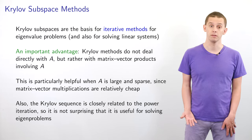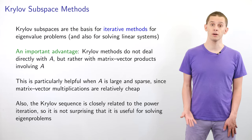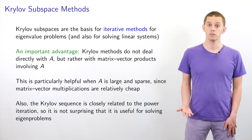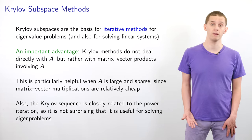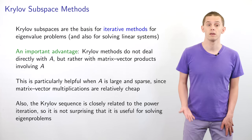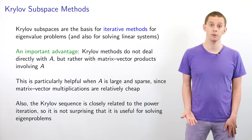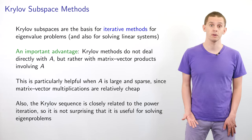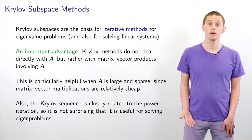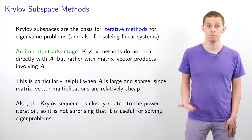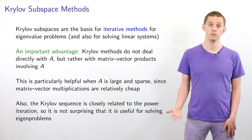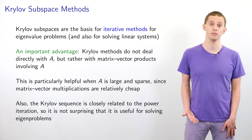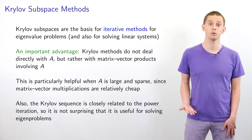There's an important advantage in the Krylov method construction in that we don't deal directly with our matrix A, but rather with matrix-vector products involving A. This is very helpful if we're dealing with a matrix A that is large and sparse, because in that case matrix-vector multiplications can be evaluated relatively cheaply. We can even use Krylov methods in the case when our matrix A might not be available to us directly, but could be given by some black-box function that evaluates the matrix-vector multiplication without giving us access to the matrix elements. We can still construct a Krylov sequence in this case.